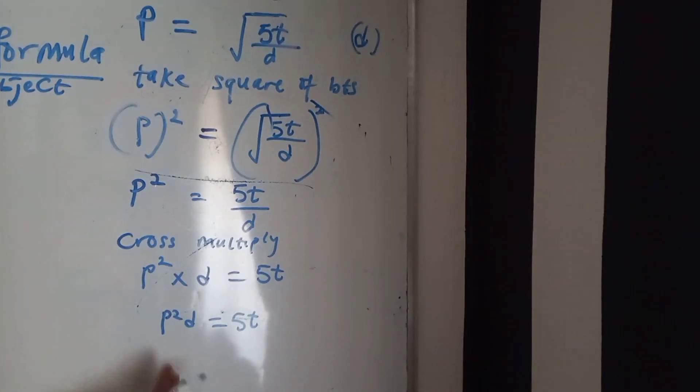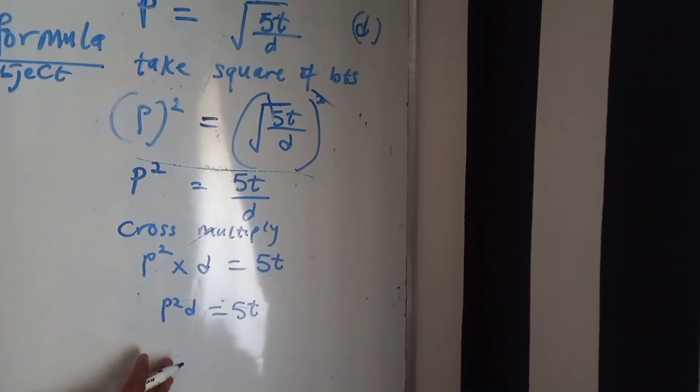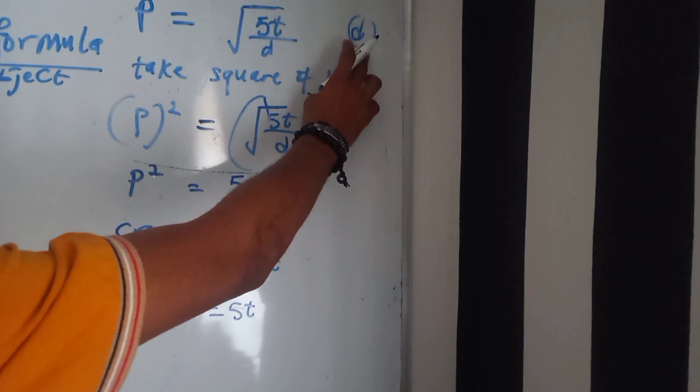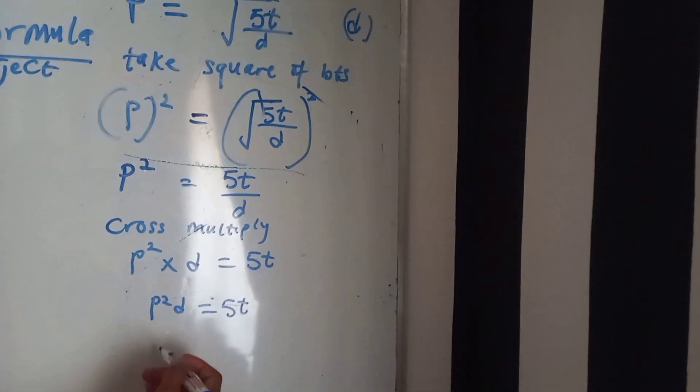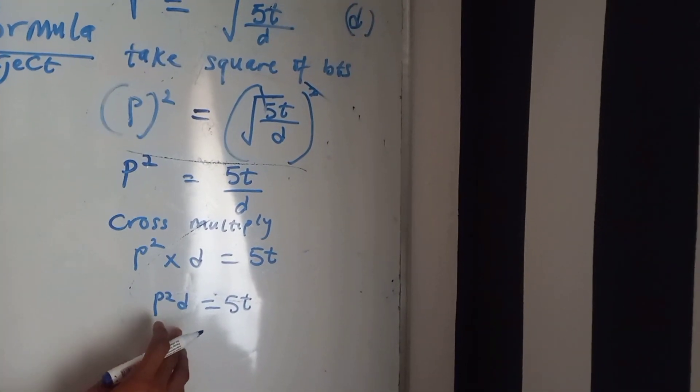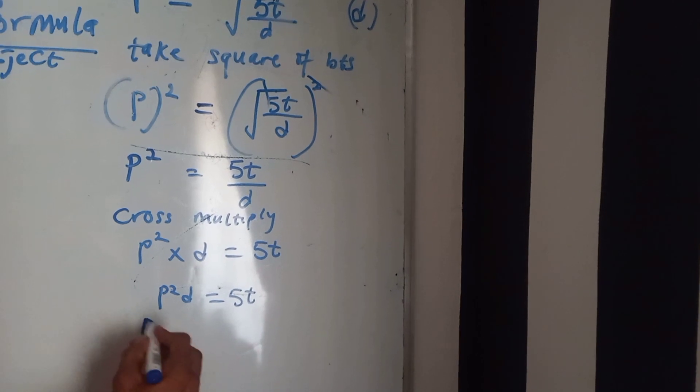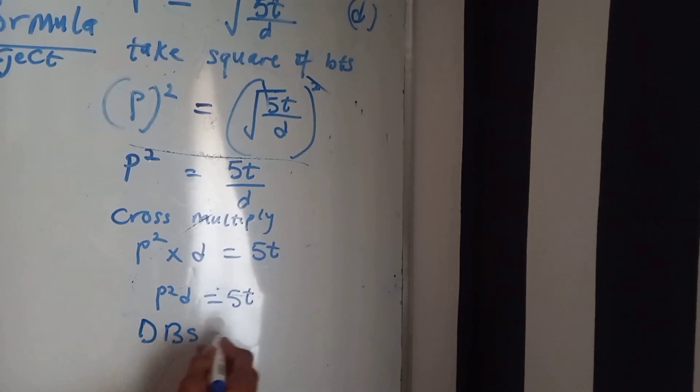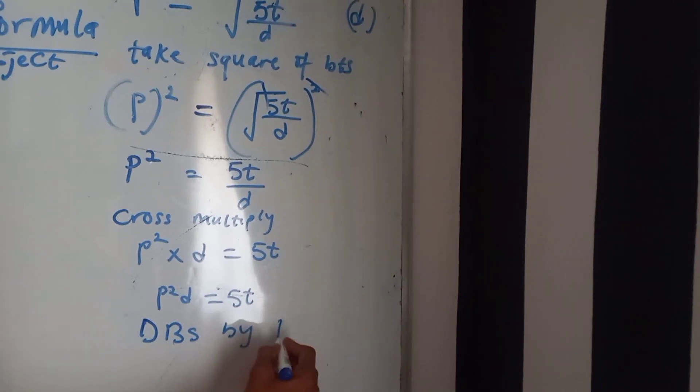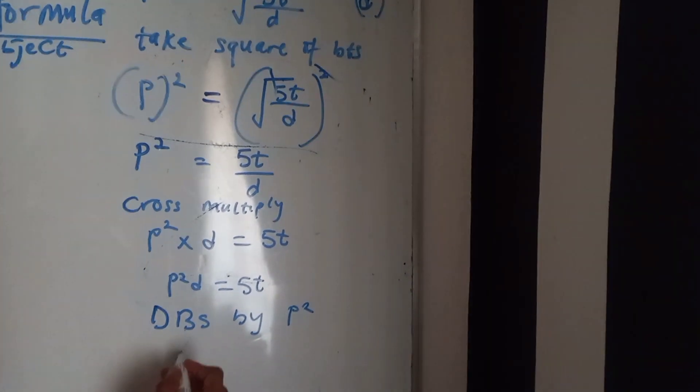So we should make d the subject of the formula to stand alone. I will divide both sides by P square. Divide both sides by P square.